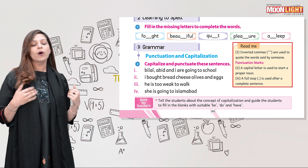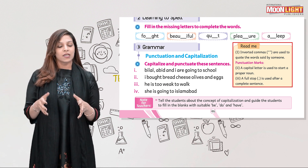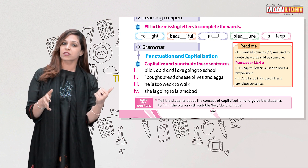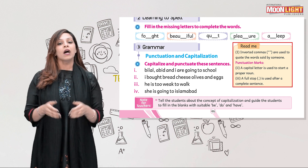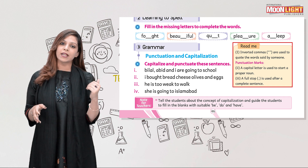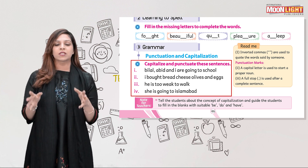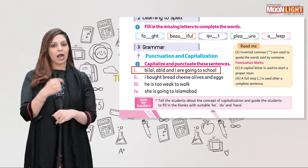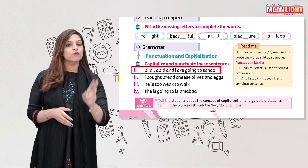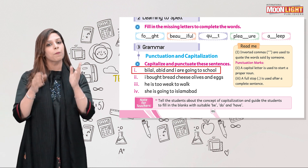Regarding capitalization: every sentence starts with a capital letter regardless of the word. If a proper noun appears in the middle or end of a sentence, its first letter must be capital. The pronoun 'I' is always written in capital even when it appears in the center of a sentence. Let's work on the sentences on page 46.